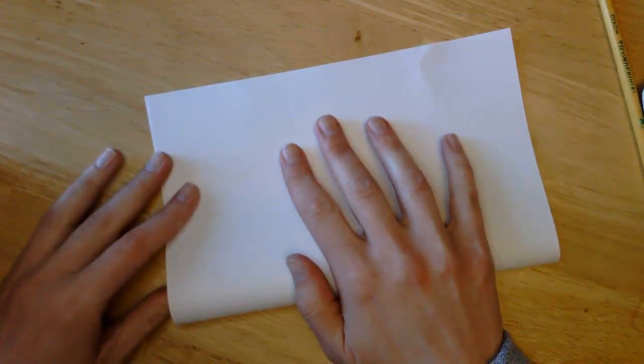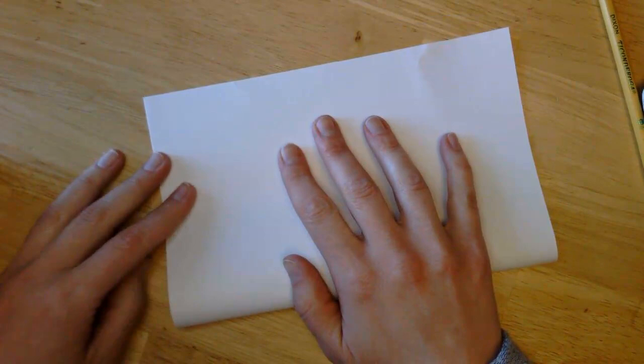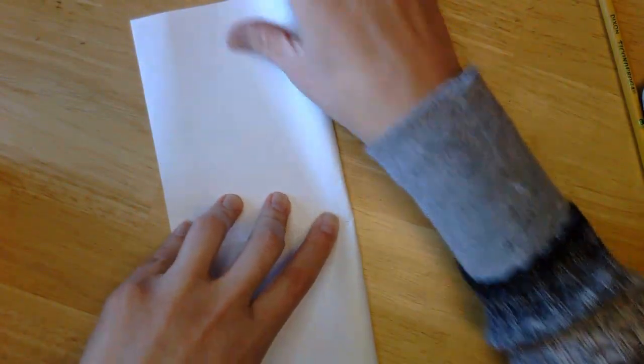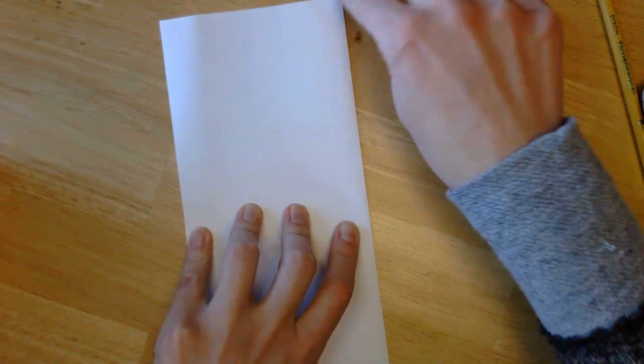Fold it in half top to bottom. Gives us that short, fat rectangle. Fold it in half side to side. Gives us that tall, skinny rectangle. Open it up.